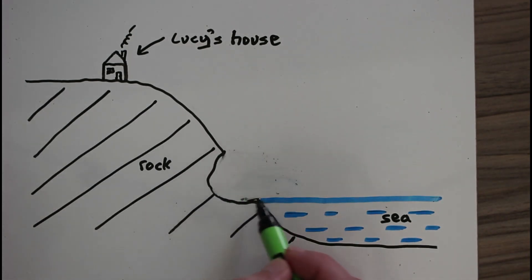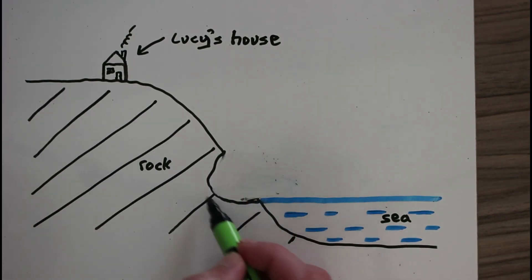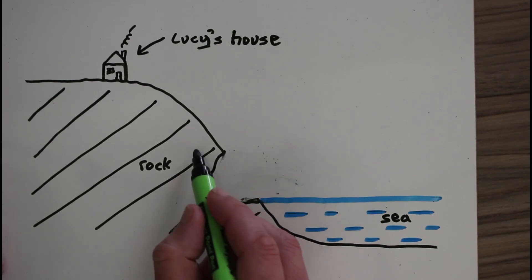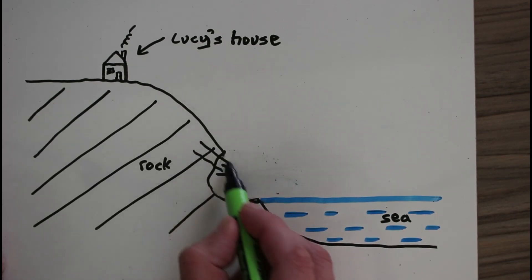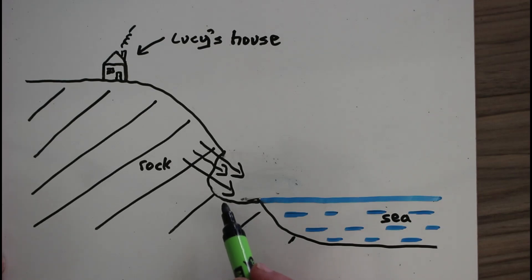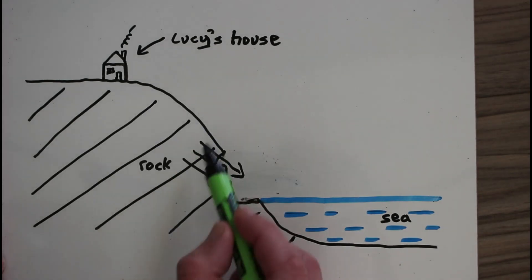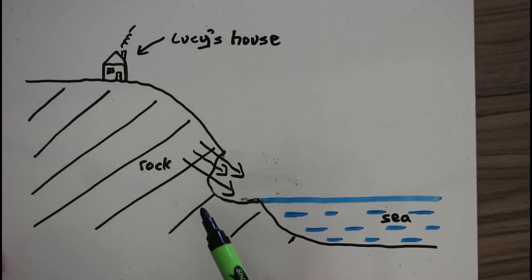What that does is it leaves a notch within the cliff face like so, and eventually the rock will collapse. It'll slide downhill because it's unsupported through mass movement, and all of the rock above Lucy's house will fall in as well, leading to her house collapsing.